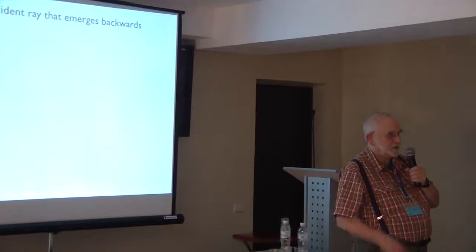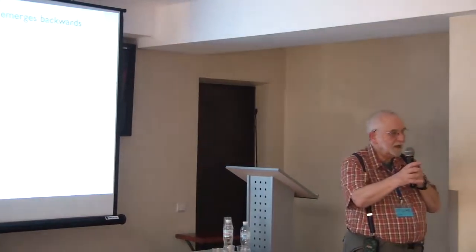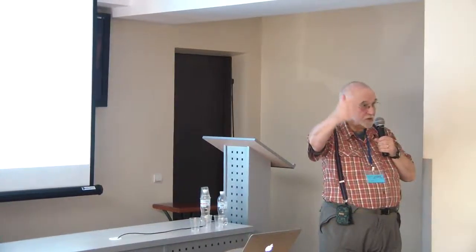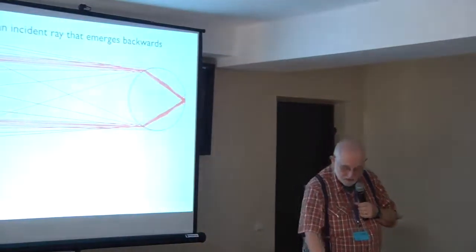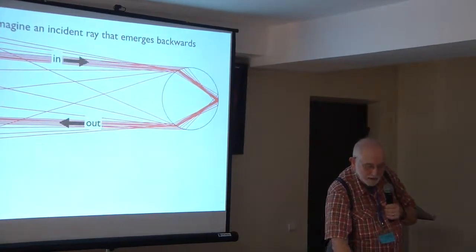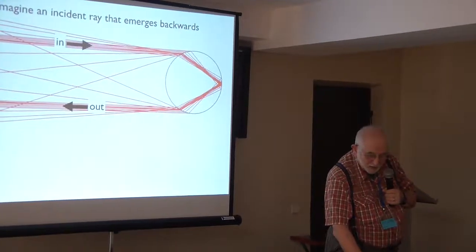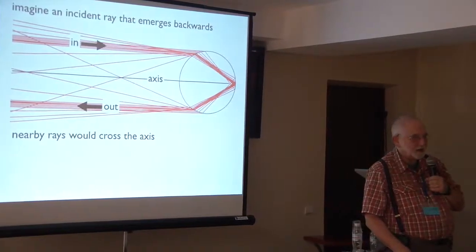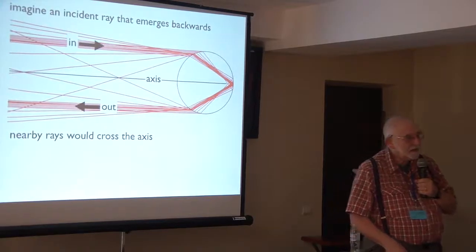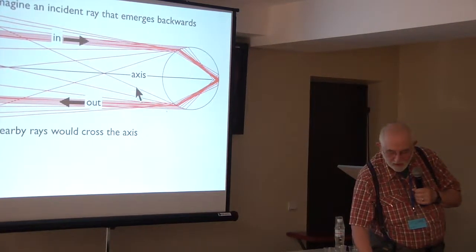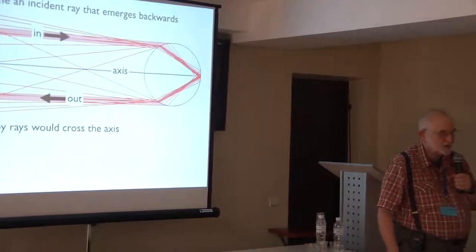Now imagine, here's the optics, that you have a ray which would hit the light, the drop, and emerge backwards. Not like the rainbow at some angle, but backwards. These are the rays, and the ray comes in and comes out. If you have such a ray, then nearby rays would cross the axis.